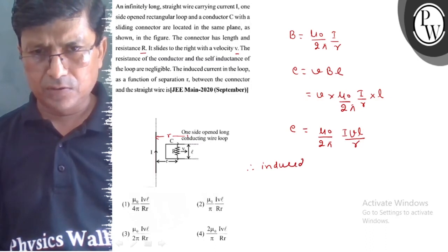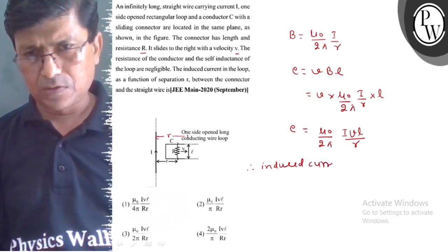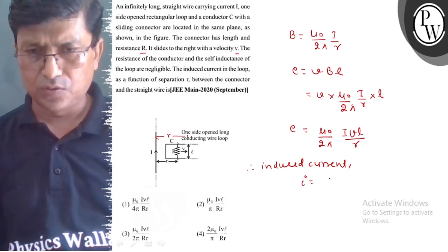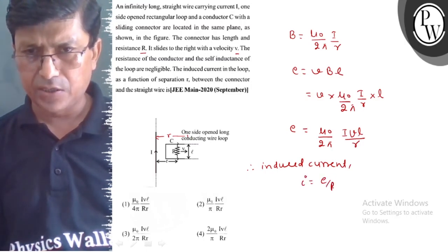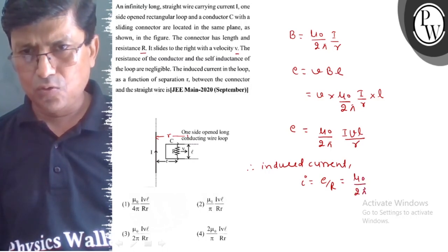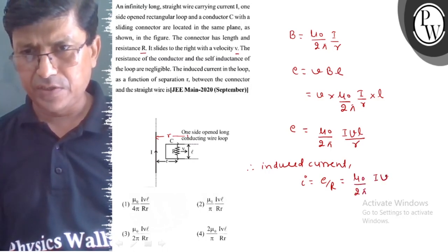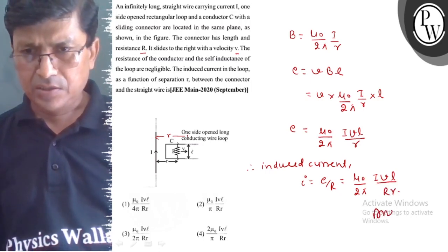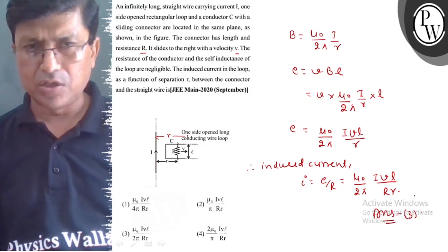Therefore, the induced current is equal to E by R. Means μ₀ upon 2π times I times V times L upon capital R times small r. This is our answer. The correct option is option number 3.